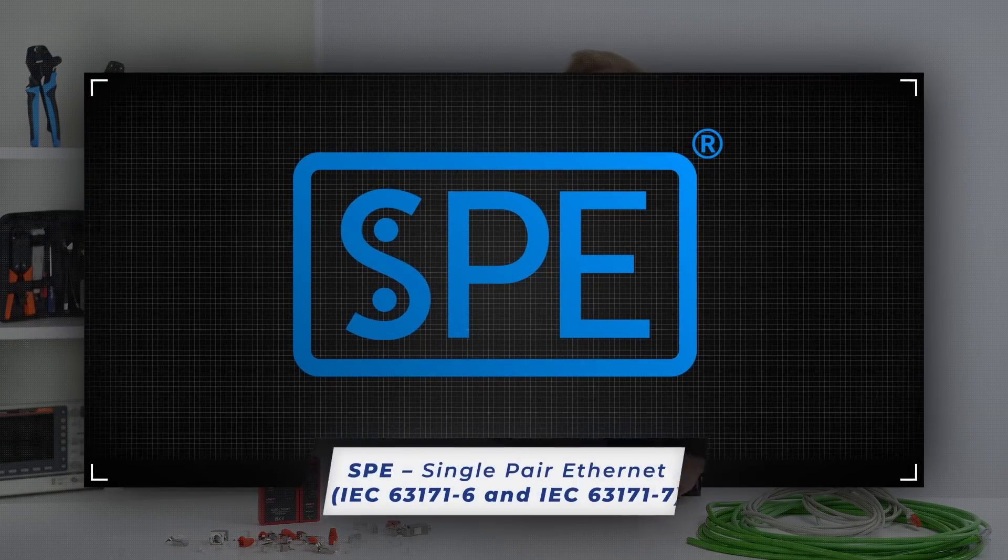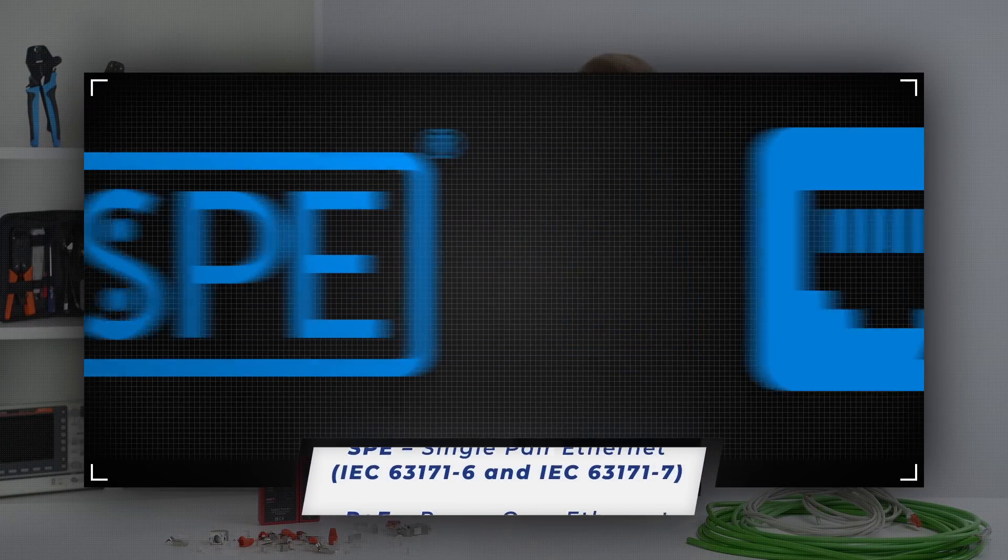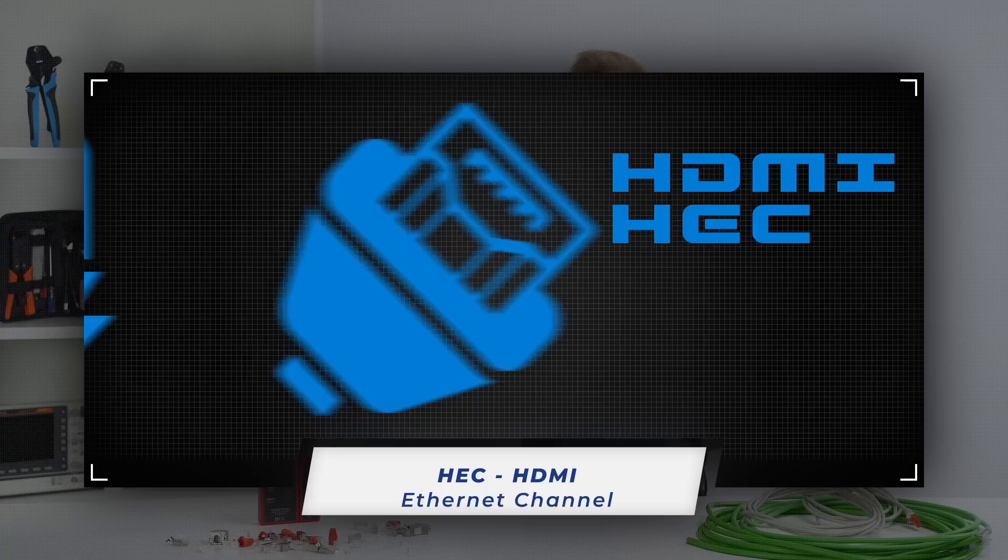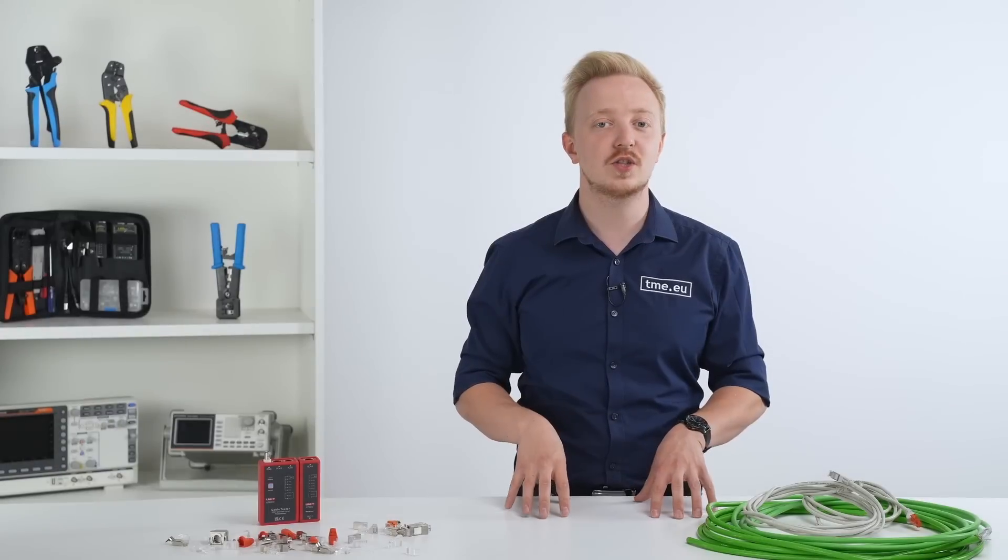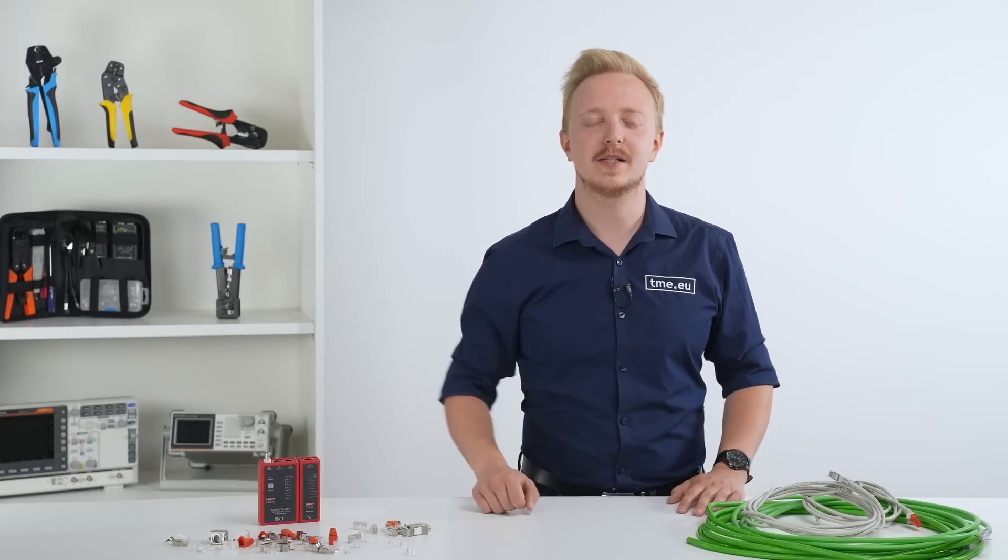Today you have the single pair Ethernet for industrial applications, power over Ethernet and HDMI with Ethernet, but originally it was developed for resource sharing and collision-free networks. Let me explain.